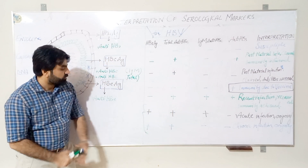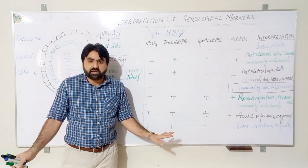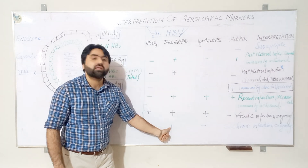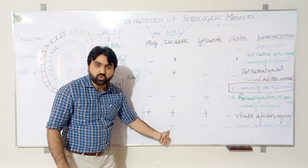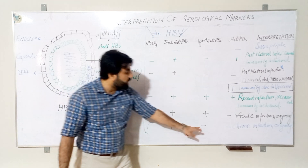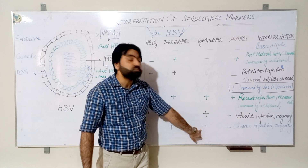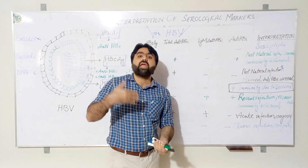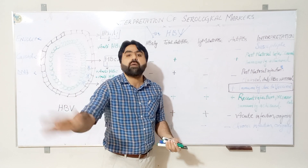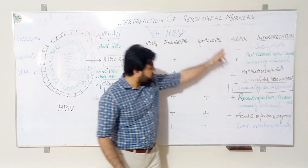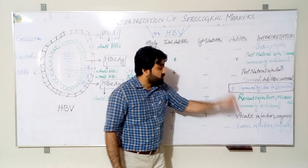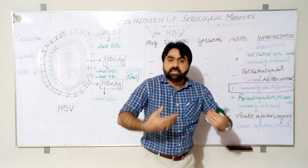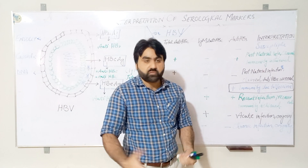The second important positive case: if HBsAg is present, total anti-HBc is present, IgM anti-HBc is absent, and anti-HBs is absent, this indicates chronic infection, still ongoing. The absence of IgM anti-HBc shows the exposure is not recent, as IgM has disappeared from the blood of the patient.